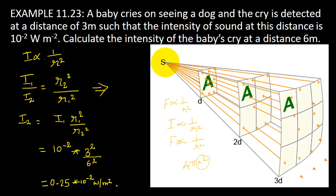Plugging in the values, the answer is I₂ equal to 0.25 into 10 to the power of minus 2 watts per meter square.